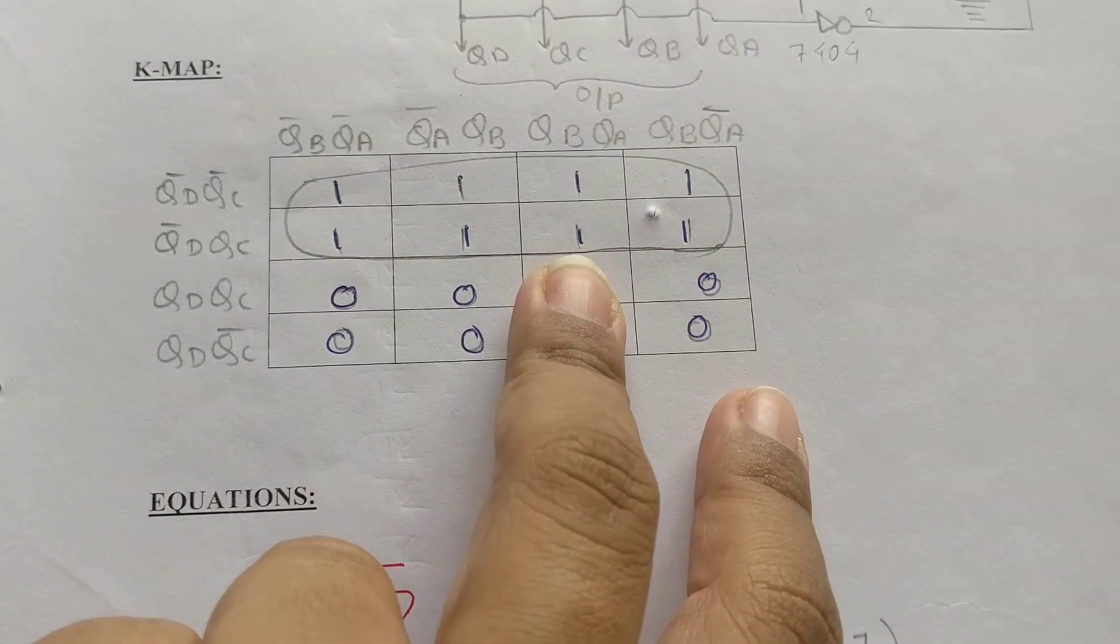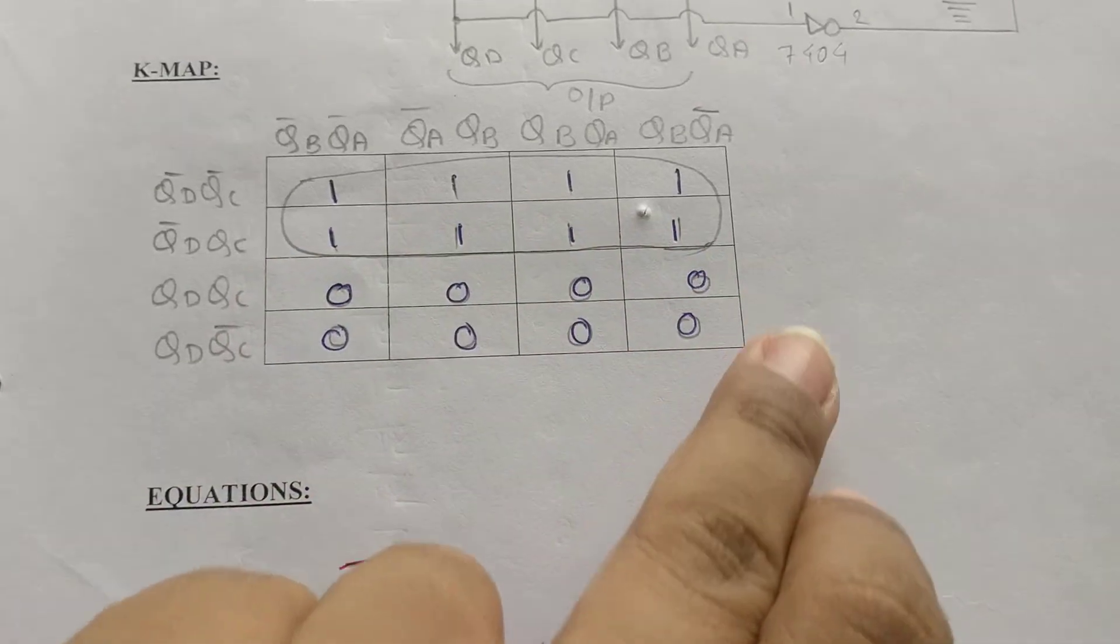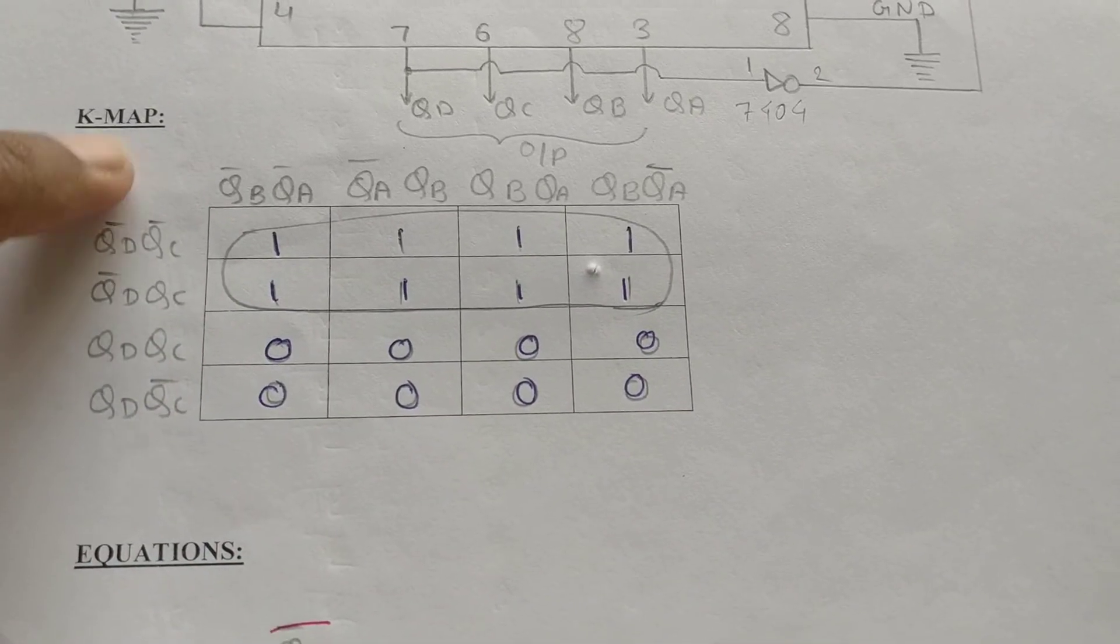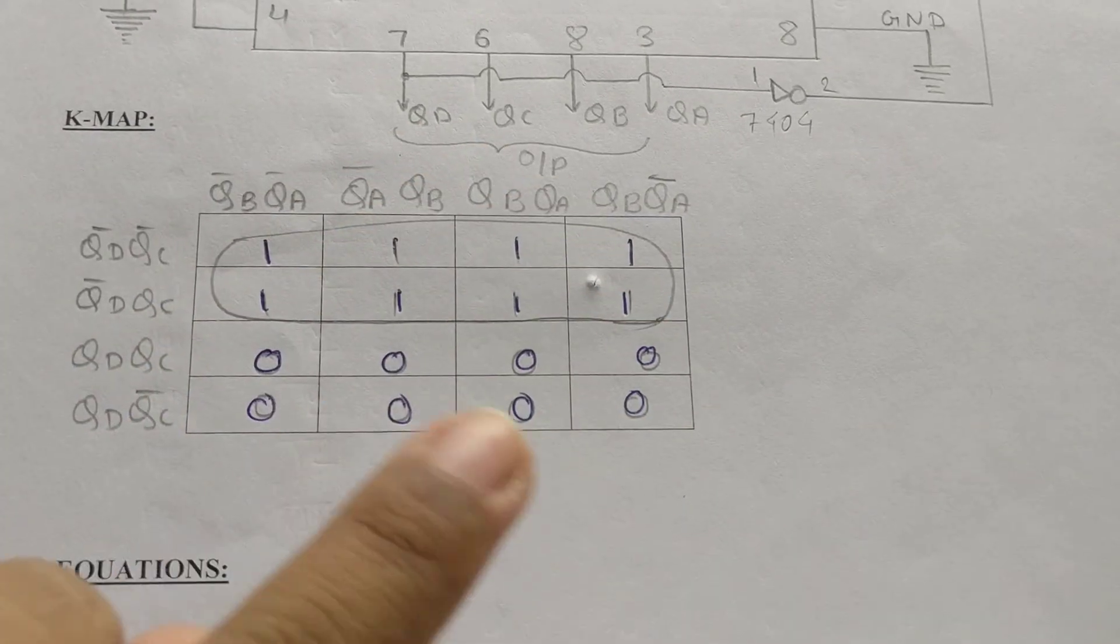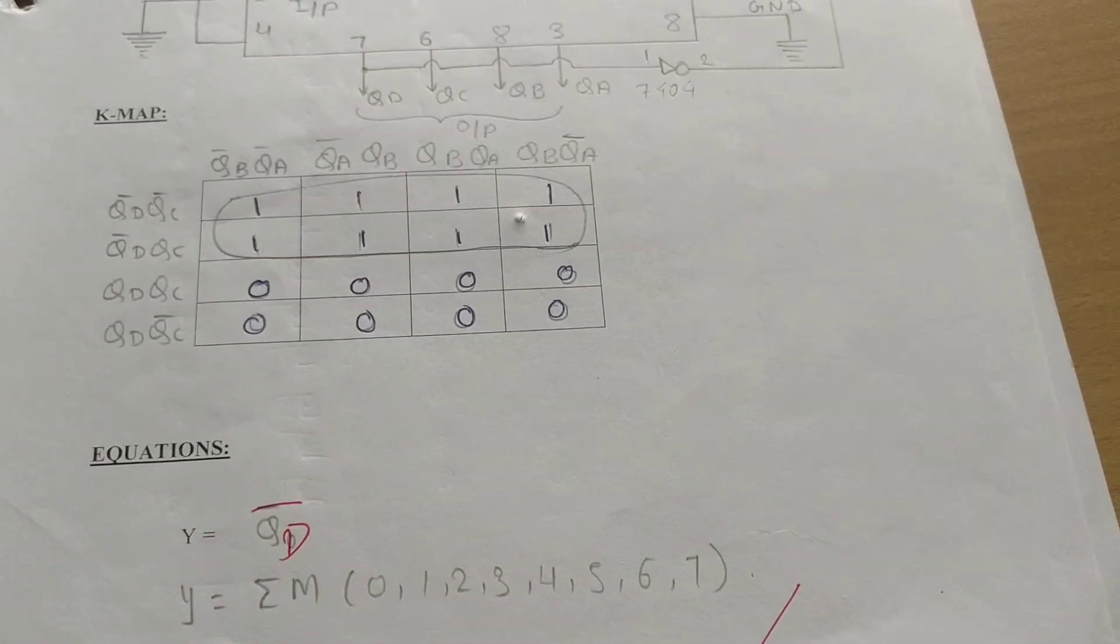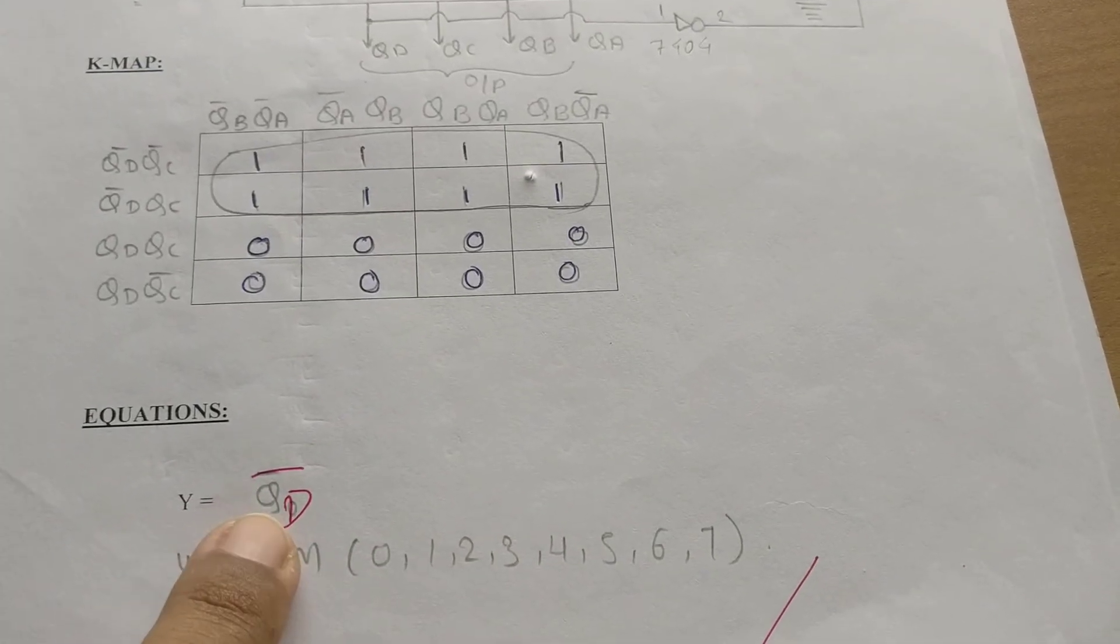4, 5, 6, and 7. We have put the 1s and the rest all in this K-map are 0. This K-map is plotted for QD, QC, QB, and QA. Using this, we have got 1 octet, and the equation for that octet will be Y equals QD bar.